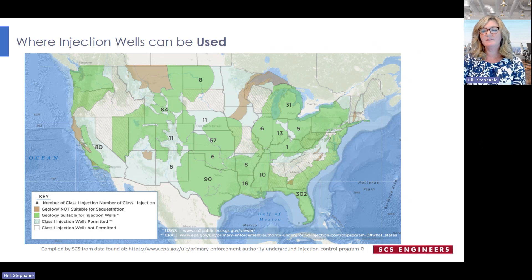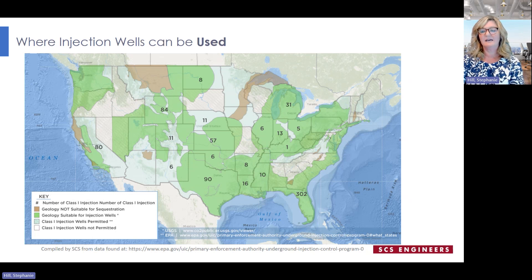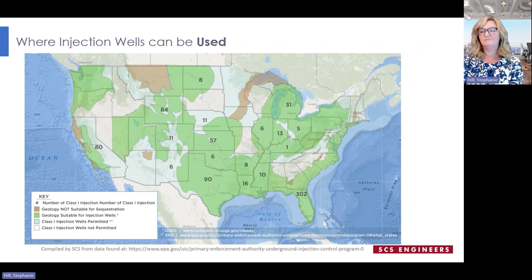Injection wells can be used across the nation, but there are several criteria that determine the suitability of an area for injection. We developed a quick-view illustration compiling information from public sources to show where suitable geology and supportive regulatory programs overlap. The green areas represent studied areas considered suitable geology for injection. The reddish-brown color represents studied areas that may not be considered suitable geology. States with hatch marks are those where injection or sequestration is prohibited at this time. Numbers on some states represent the number of permitted Class 1 deep well injection systems in that state. Where suitable geology, supportive regulatory programs, and existing injection wells all overlap, there's a pretty good chance that siting a well there may be feasible.